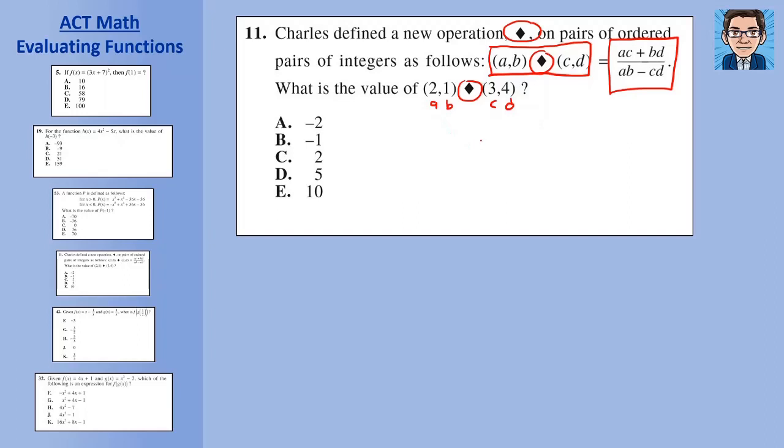So a times c is 2 times 3, b times d is 1 times 4. In the denominator, we've got a times b, that's 2 times 1, minus c times d, which is 3 times 4. We took a, b, c, and d and put them into this equation. 2 times 3 is 6, 4 times 1 is 4—doing multiplication first by order of operations. Then 6 plus 4 is 10 over 2 minus 12, which is minus 10. That gets us 10 over minus 10, which is negative 1, or B as the answer.